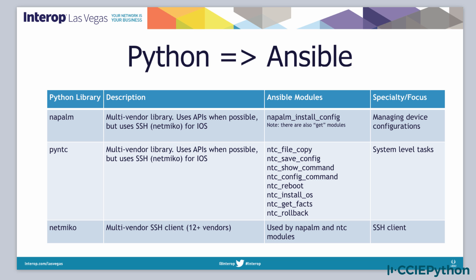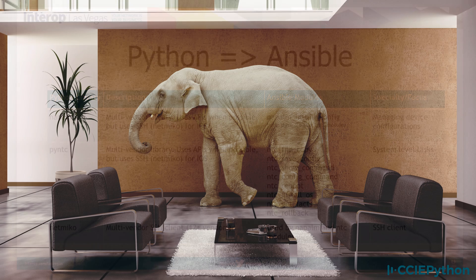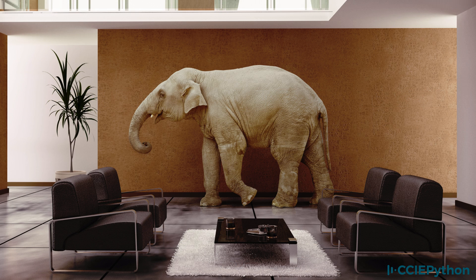NetMiko is a multi-vendor SSH client that supports many vendors. It's used by both Napalm and NTC modules, and it provides a great SSH client for configuring network devices — specifically to tackle the elephant in the room: Cisco IOS devices.